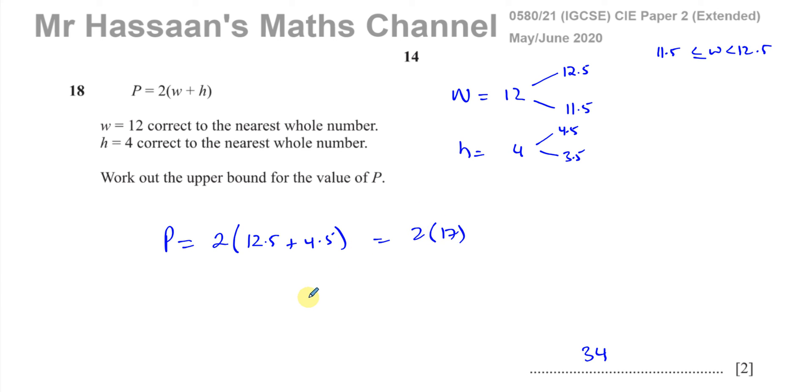And the other common error for upper bounds is people write 12.4 or 12.49 or something like that. No, you have to write 12.5 because the word upper bound means this exactly. That's what it means by definition. It means everything just before 12.5, not including 12.5. So you have to use, that's what the word upper bound means. So it's very important for you to understand that point.